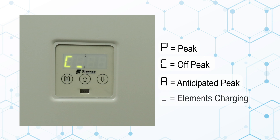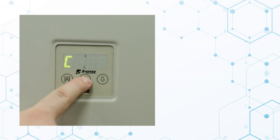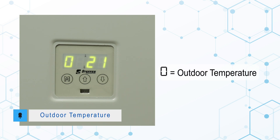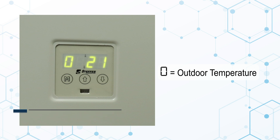When heating elements are energized, an underscore illuminates in the display's second digit. Press and release the up arrow. The display will show O and a number, indicating the current outdoor temperature as read by the hardwired outdoor sensor or PLC transmitting device.